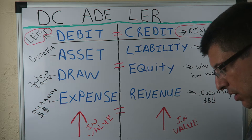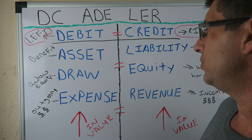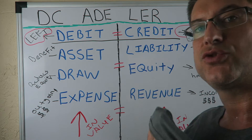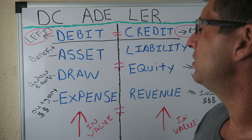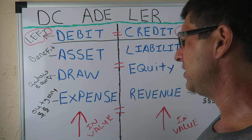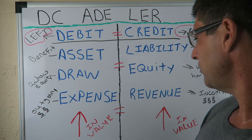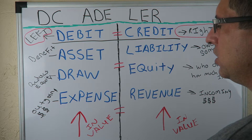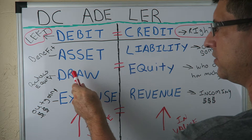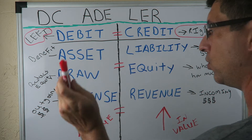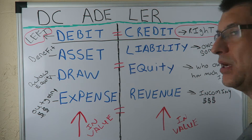How would you know? If you have an asset increasing in value, you debit it. If you have a withdrawal increasing in value, you debit it, because that's on the debit side. If you have an expense increasing in value, you debit it. So if you have an asset, a shareholder distribution, or an expense increasing in value, you debit it — you put it on the left side of the equation.